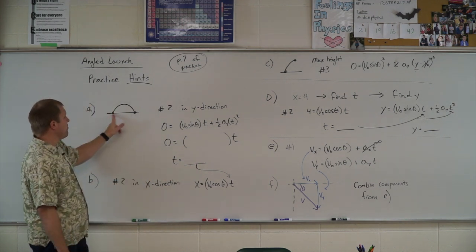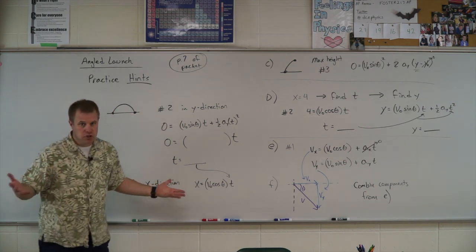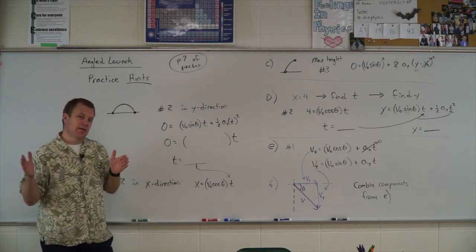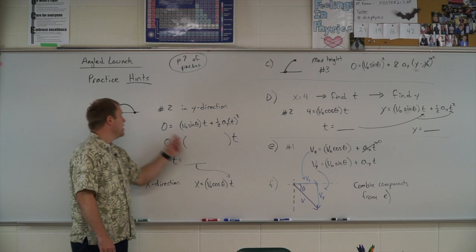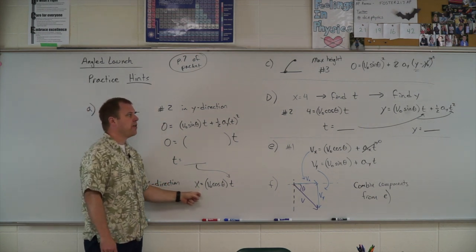After that, you're going to want to figure out how far did it go. Well, you're finding the range. You're going to use equation number two in the x direction because acceleration is zero, and you're going to use that time from the y direction because remember, time is our link between these two. So the time it was in the air, for that whole time it was moving horizontally, you want to figure out how far that was.